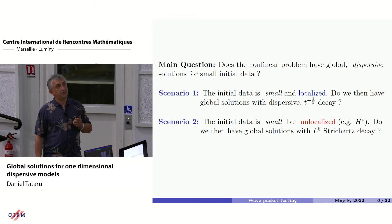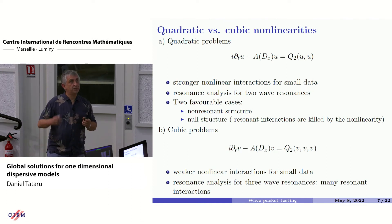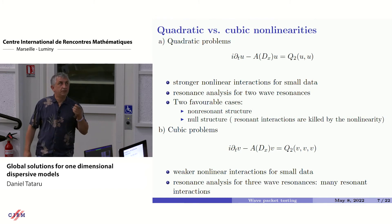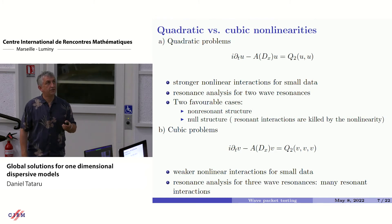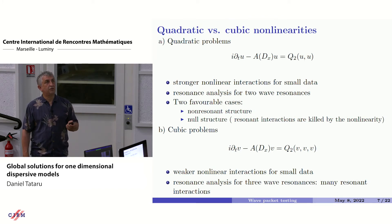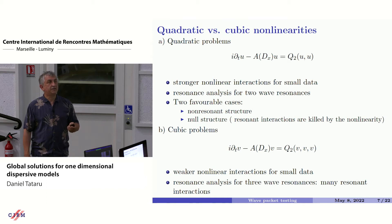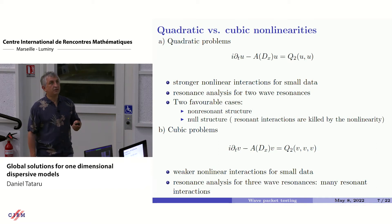Before telling you about the results in both scenarios, let me begin with a quick discussion to distinguish between problems with quadratic nonlinearities and cubic nonlinearities. For quadratic nonlinearities you have stronger nonlinear interactions and you have to worry about resonance analysis, which plays an important role for two-wave resonances. For cubic problems you have more resonant interactions but for small data the nonlinear interactions are weaker. One classical idea in this area is the normal form idea.